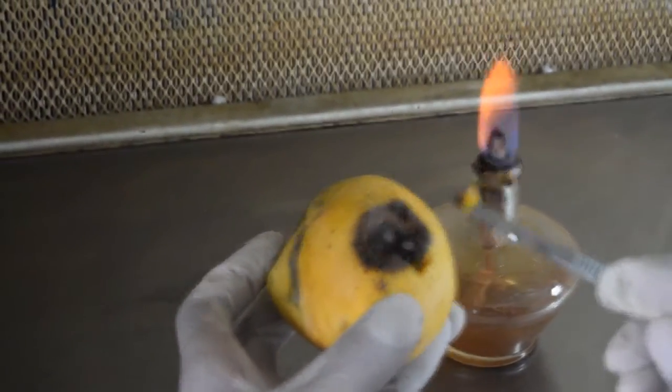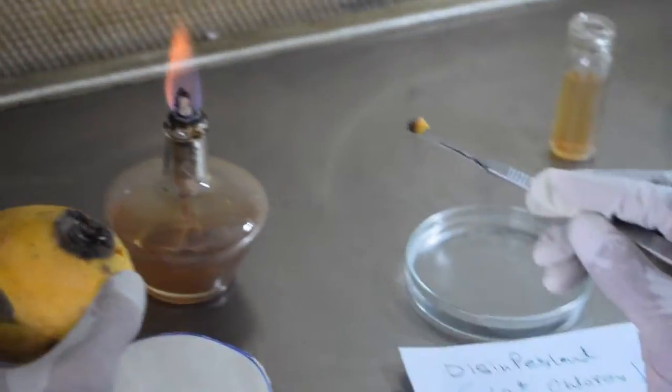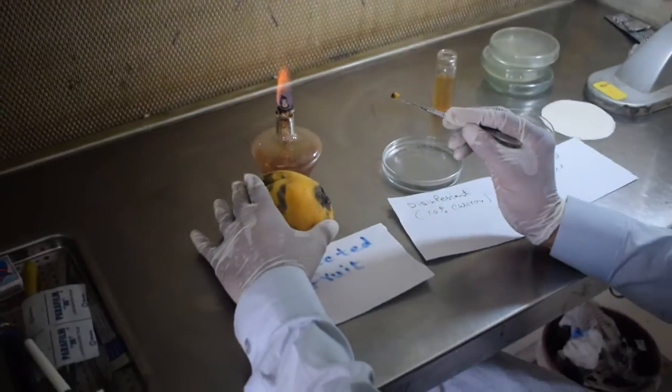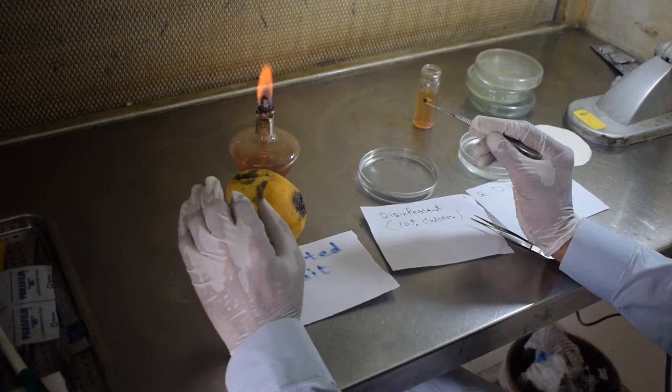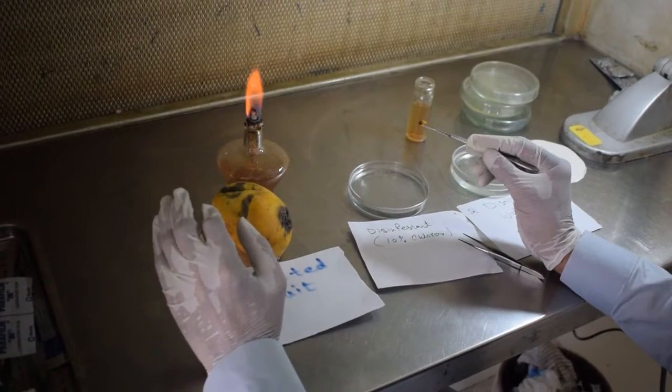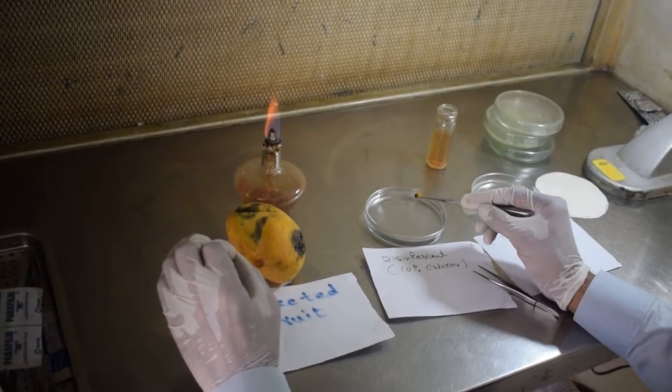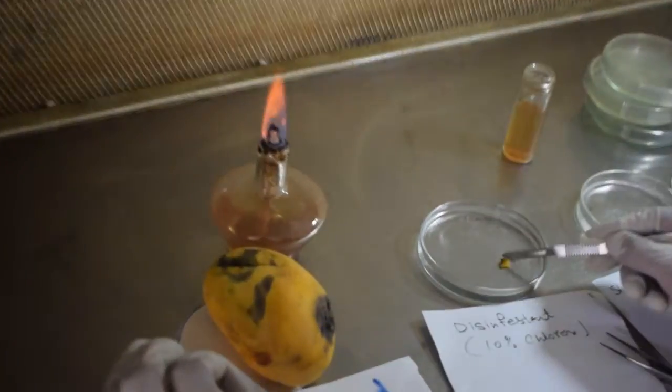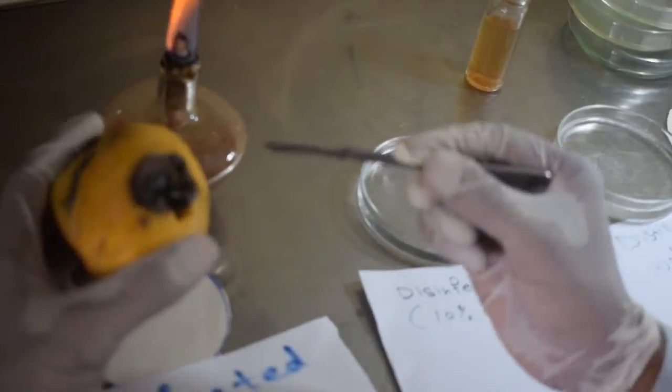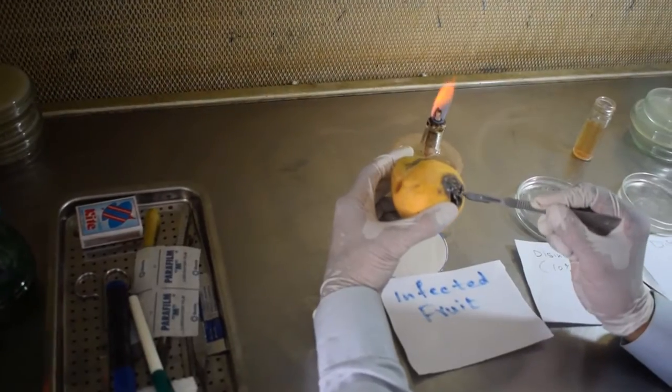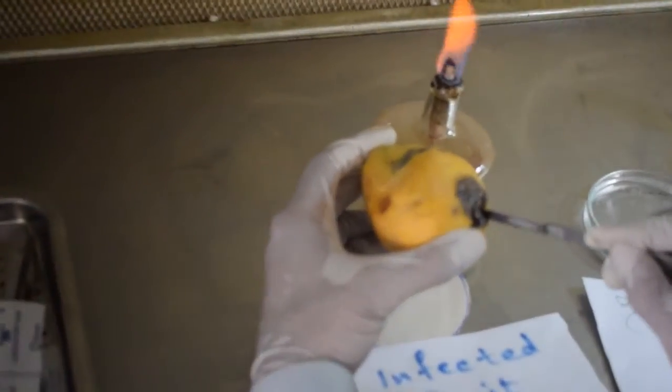We need the infected part and the living part, and we are taking 3 pieces for 3 petri dishes.